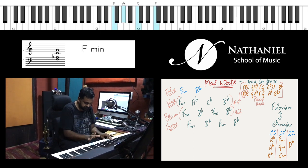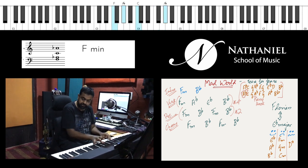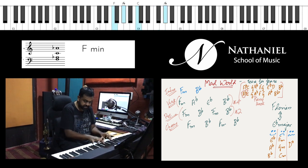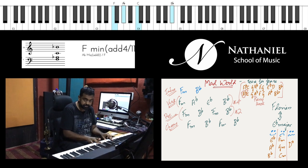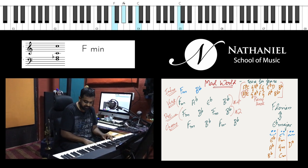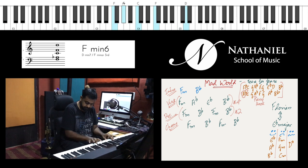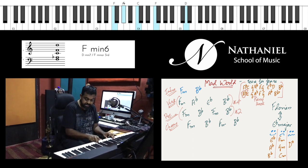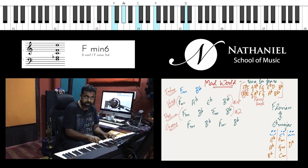you'll have F, G, A flat which is the flat 3, normal 4 B flat, normal 5 C. That's a major 6th, so normally in a minor scale you'll have a flat 6,